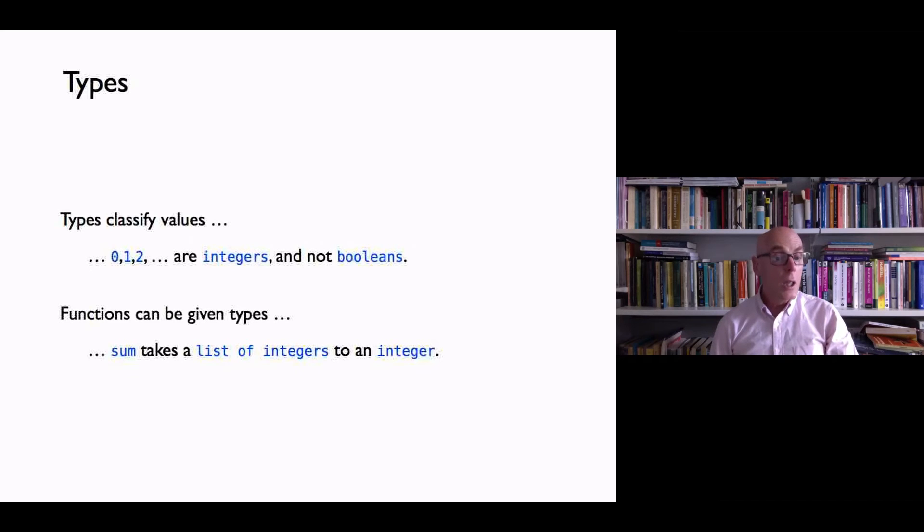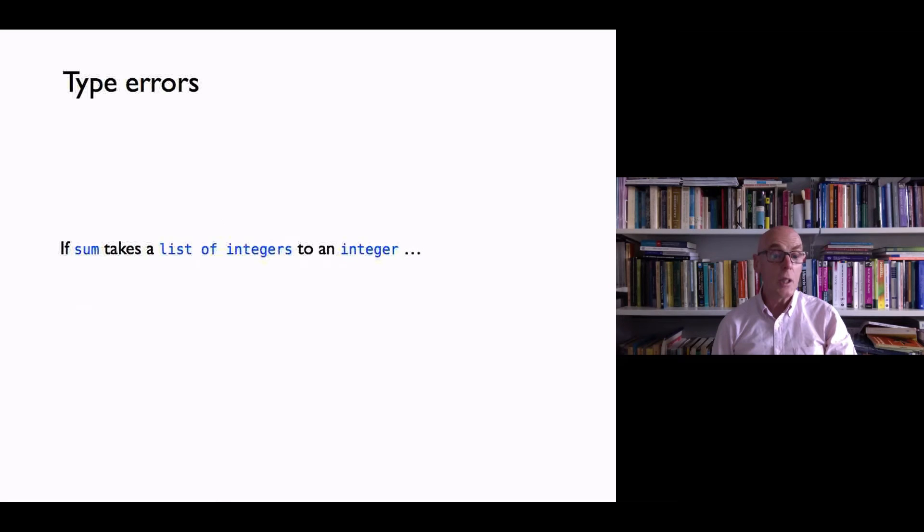So types classify values and the functions that we write can be thought of as transforming things of one type to a given type. If sum takes a list of integers to an integer, then it's an error to apply sum to true or to the list true and false. It's also an error to take the length of its result because it's an integer, not a list.